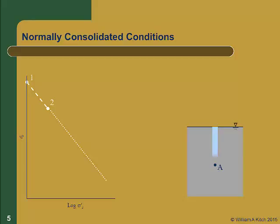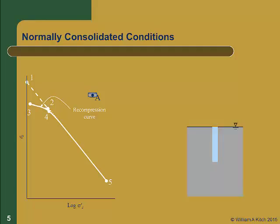If we then come in to sample at point A we are going to take it out of the ground, and in the process unload it, and the soil will travel along the rebound curve from point 2 to point 3. We then test our soil in the lab and it will reconsolidate first along the recompression curve from point 3 to point 4, and then when it gets back to the virgin curve it will travel along the virgin curve from point 4 to point 5.